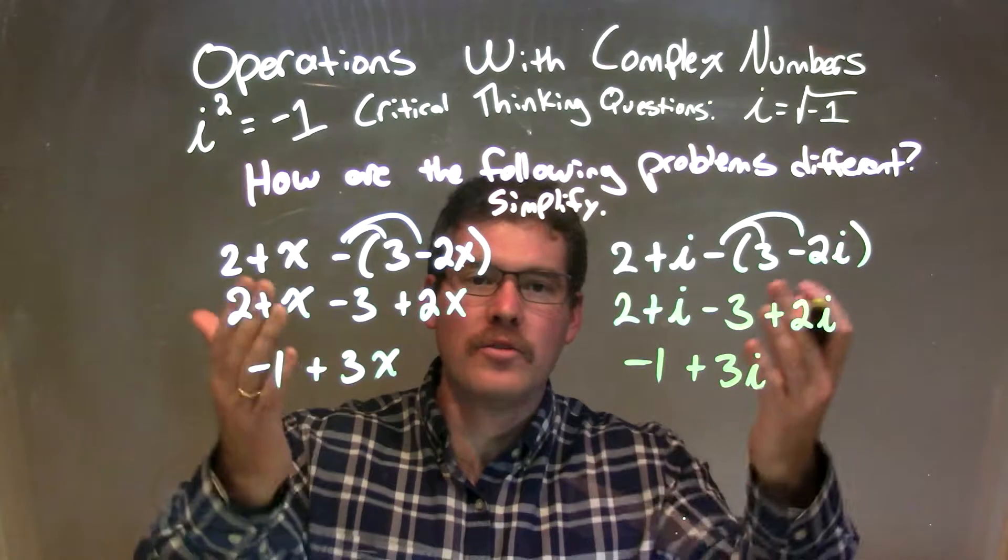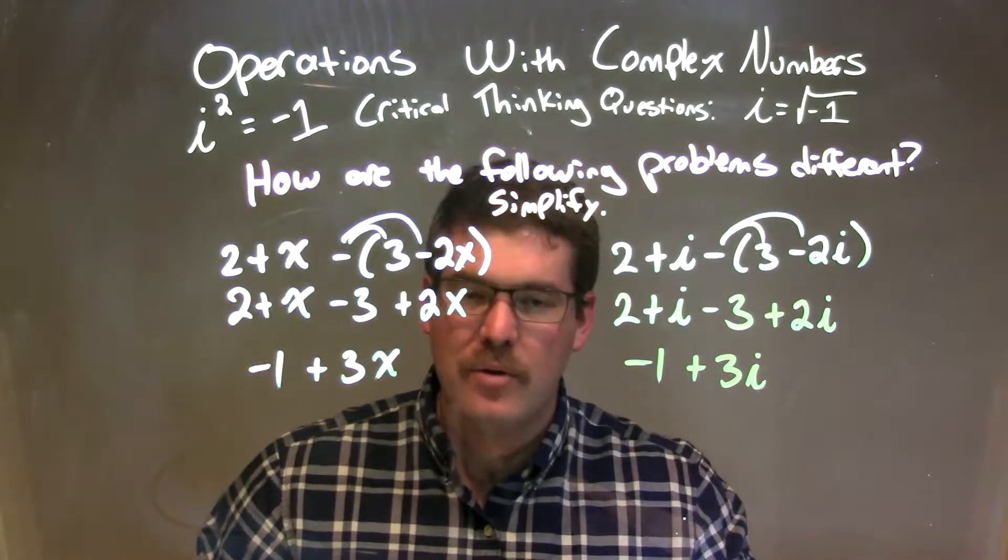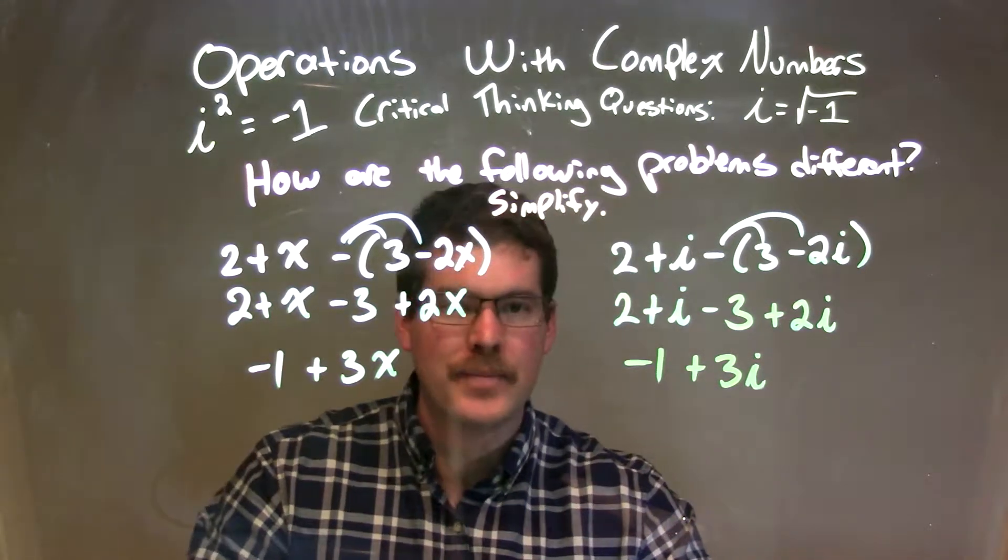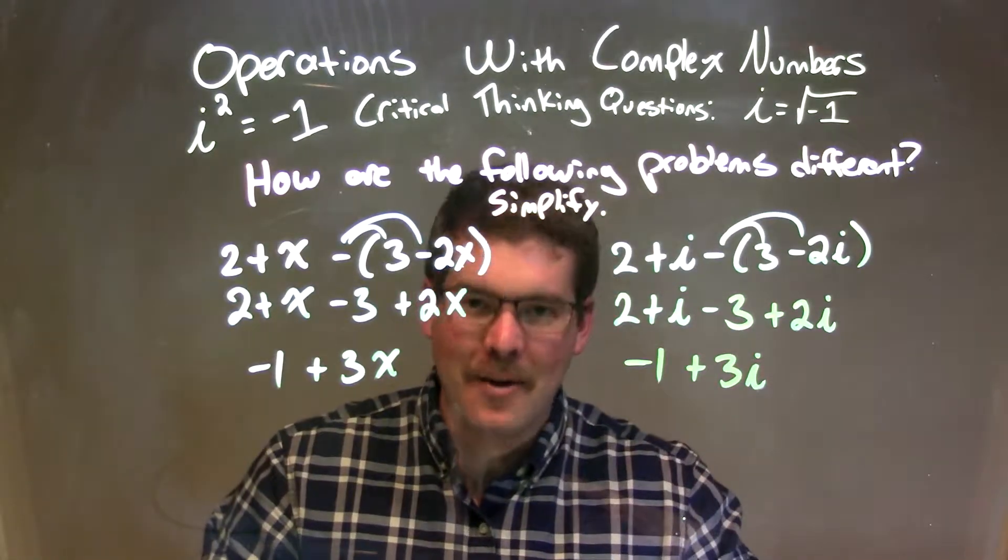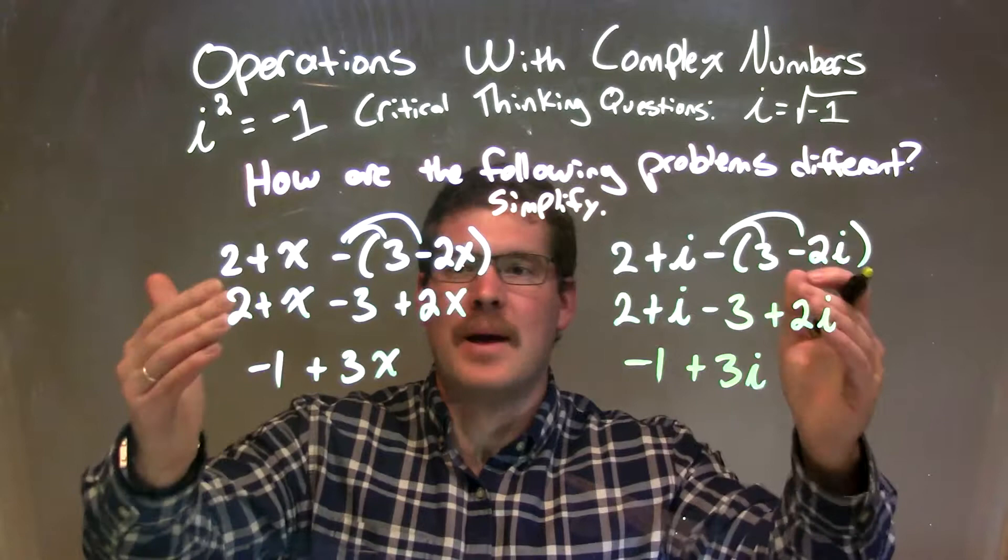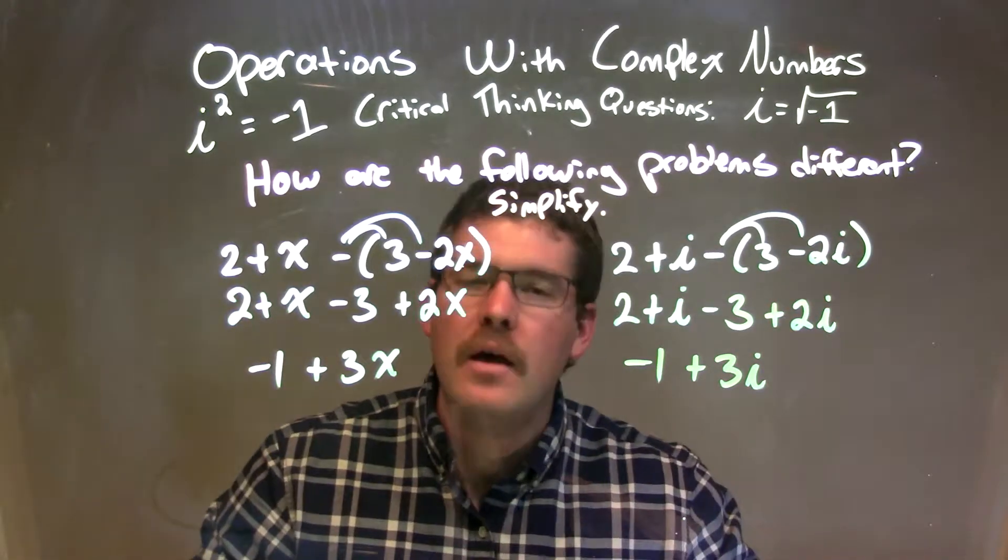In this case, as far as our steps, we simplified both all the way and there is nothing different. The only difference really being this is a variable and this is an imaginary number. But other than that, all the steps were exactly the same. So let's recap.